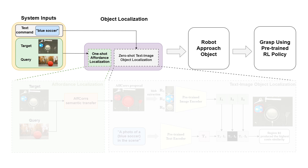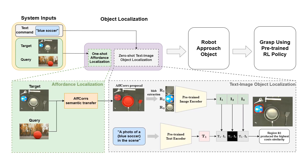Then, the object is localized so that the robot can grasp using a pre-trained reinforcement learning policy. The query is used to find similar objects in the target image with one-shot affordance matching. The output regions are then fed into a zero-shot object identification, which outputs the region that matches best to the text prompt to localize the target object.